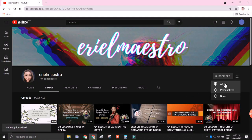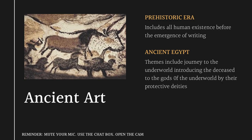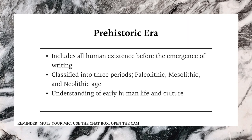So let's get started. This part includes prehistoric era and ancient Egypt. First, let's discuss what is the meaning of prehistoric era. Prehistoric era includes all human existence before the emergence of writing. It is classified into three periods, particularly Paleolithic, Mesolithic, and Neolithic age. Understanding of early human life and culture is one of the characteristics of prehistoric era.